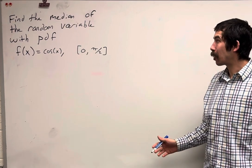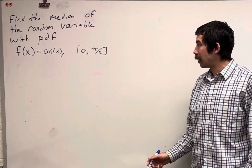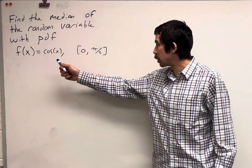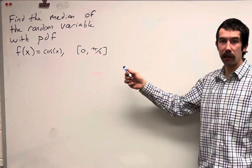Happy learning! Today we're going to find the median of the random variable with probability density function given by cosine of x on the interval 0 to pi over 2.